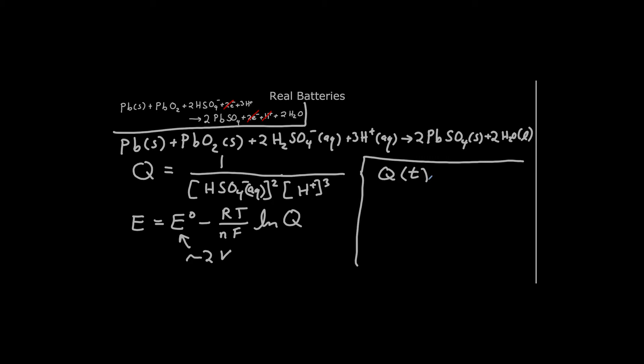Okay, well we can look at the Q value here, and we can see that over time we're going to be decreasing the concentration of hydrogen sulfate and of hydrogen ion, because they're reactants. We're going to be using them up. So this is going to get smaller and smaller, and so Q is going to get bigger and bigger. So Q is going to go up over time. And if Q gets bigger, this logarithm is going to get bigger, and that's going to start eating away at this. So we can see that the voltage is going to go down.